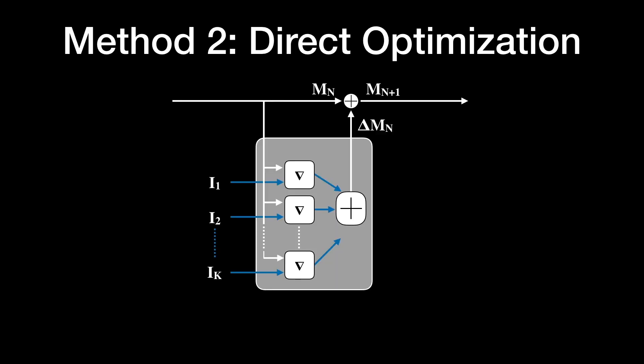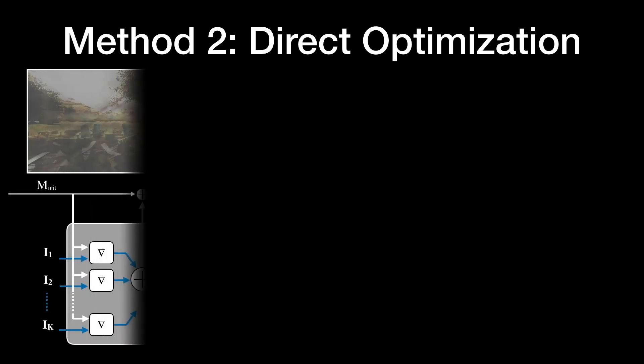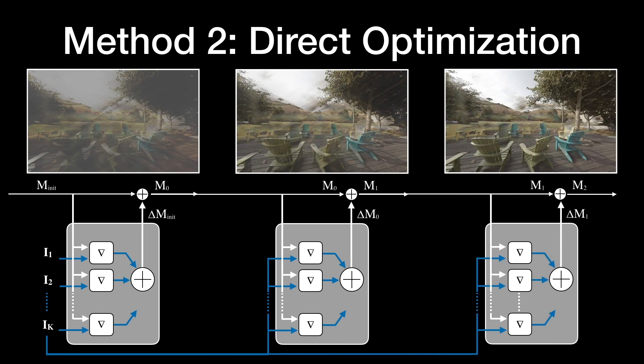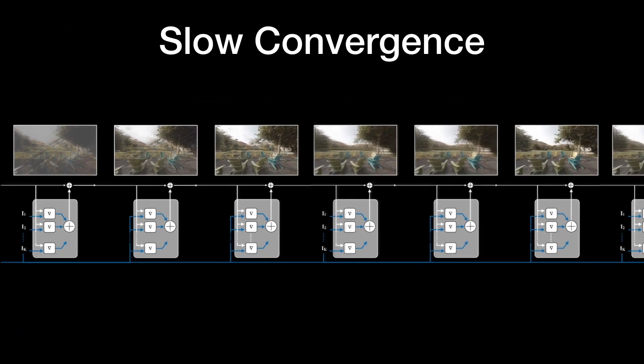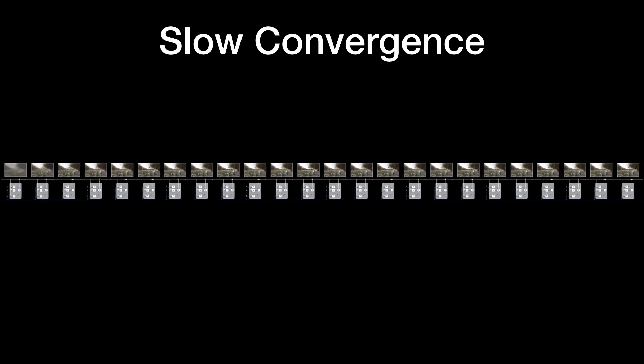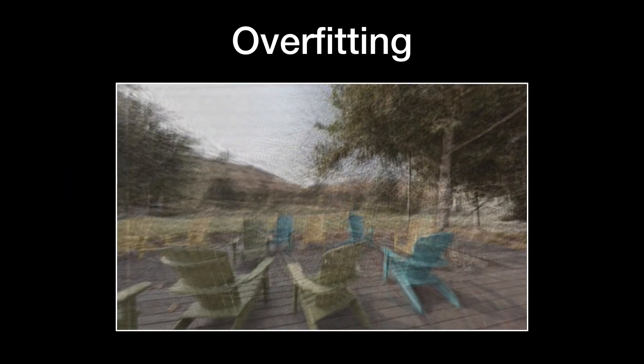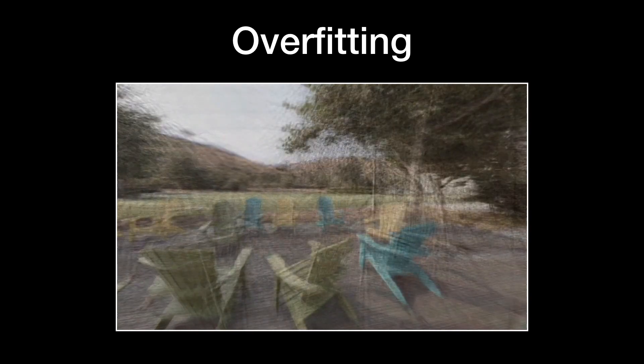Another possible approach to generating an MPI is to model it as an inverse problem and iteratively optimize its parameters with standard gradient descent. The gradients are computed from the difference between the input images and the images rendered from the MPI. By starting from an initial MPI and iteratively improving it, such an approach intrinsically models visibility between the MPI and the input images. However, this approach is very slow, requiring many iterations before convergence, and given a limited set of input views, simple optimization will lead to overfitting as seen here.